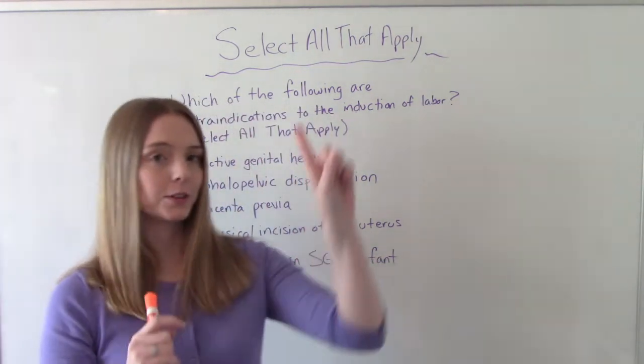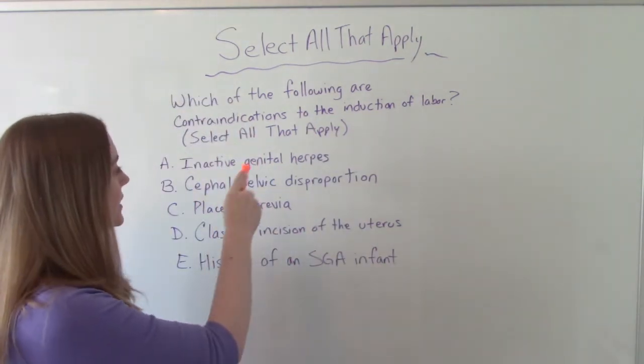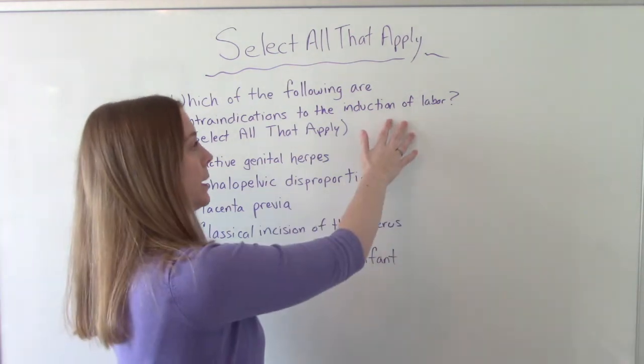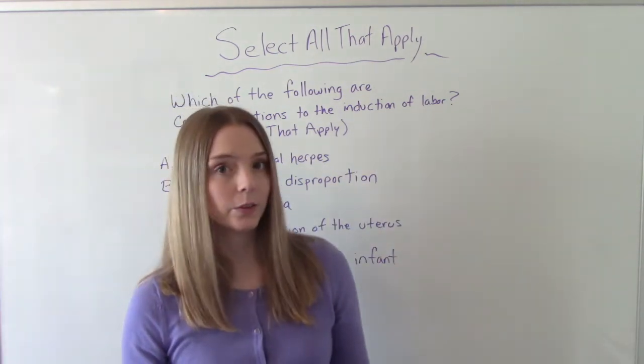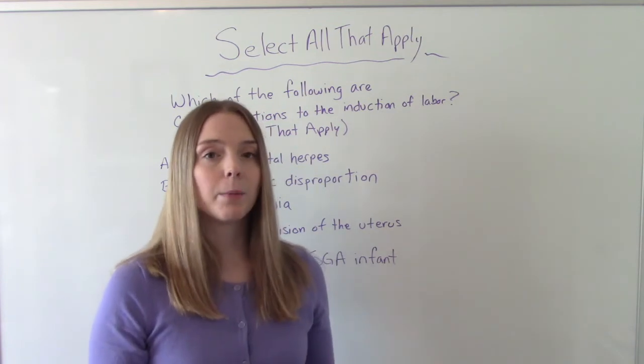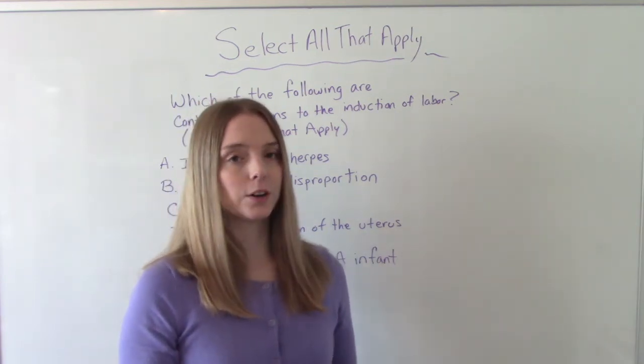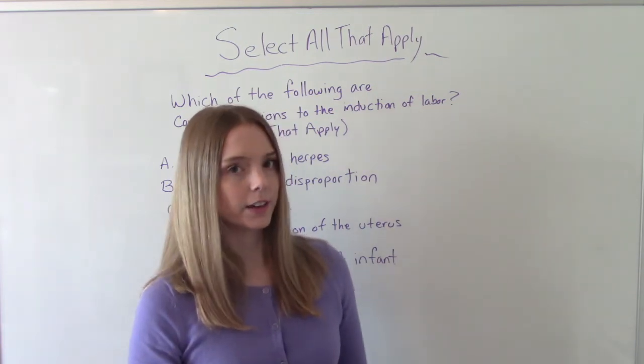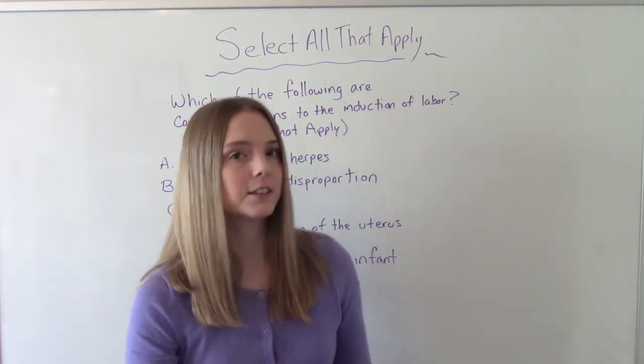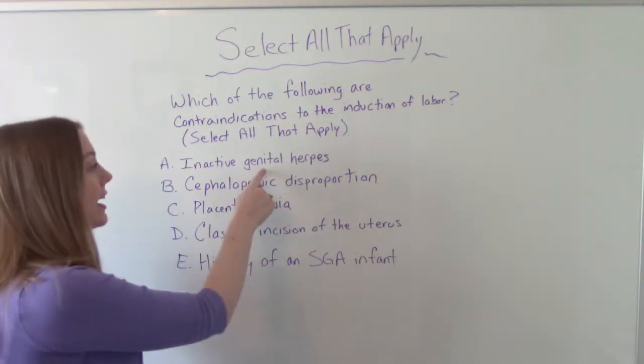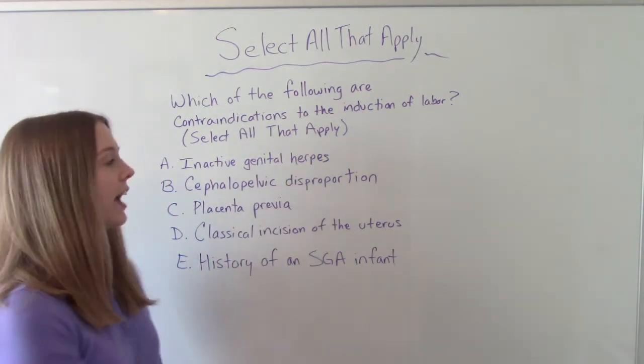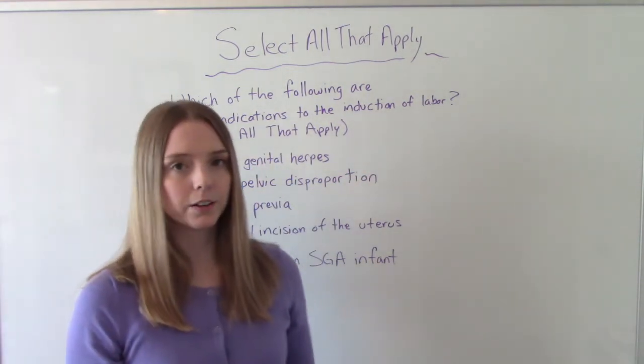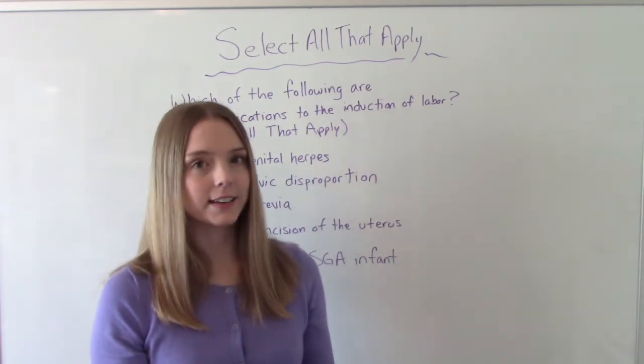So let's see some of our choices. The first one, because we're going to do these one at a time, right? Inactive genital herpes. So induction of labor is letting somebody give birth vaginally, right? And we know somebody who has active genital herpes does not get to give birth vaginally. So we wouldn't induce that person. But what does this option say? It says inactive genital herpes. So it's perfectly fine for somebody like this to be induced and have a vaginal birth. So it's not a contraindication.